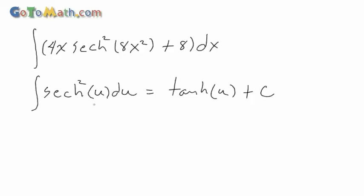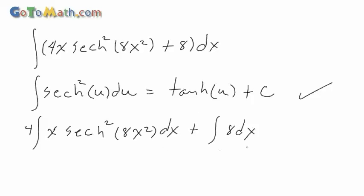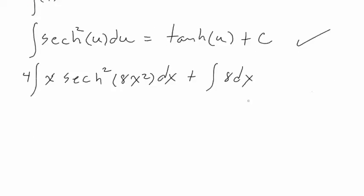So we're going to keep this. This is what we're going to use right here. So what I'm going to actually do here is break this up into two separate integrals. And I'm going to take that 4, bring it outside on this one. So we have 4 integral of x secant h squared 8x squared dx and then plus we have the integral of 8 dx. That's trivial. That should be old hat there, the second one.